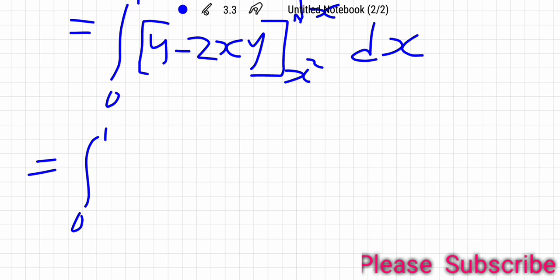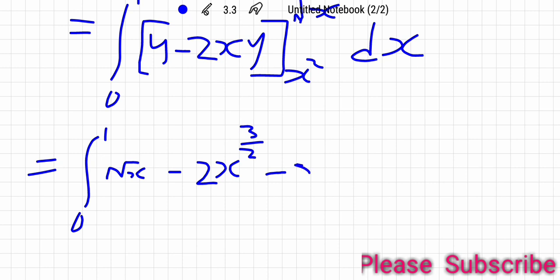Replacing y with root x gives root x minus 2x times x to the power one half, which is x to the power 3 over 2. Subtracting the lower limit by replacing y with x squared gives x squared minus 2x squared times x squared, which becomes positive 2x to the power 3, so we add 2x cubed.